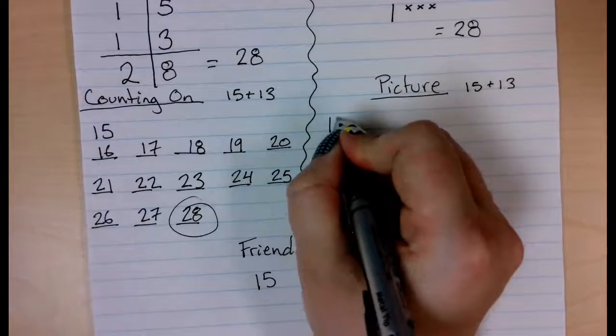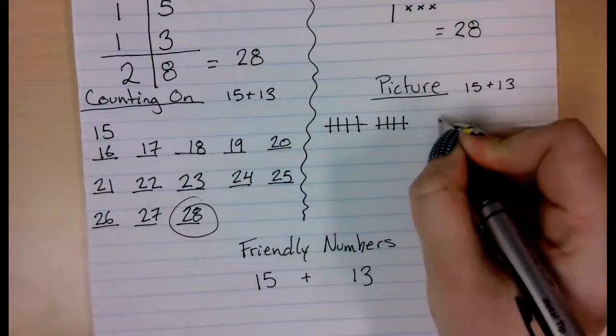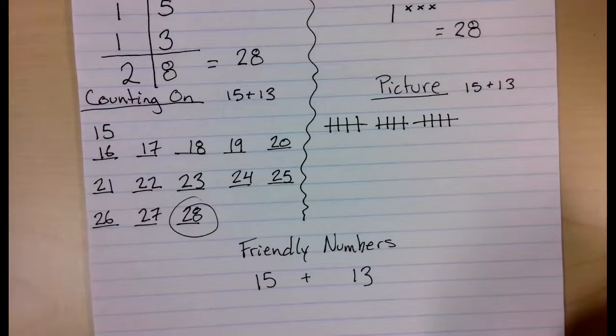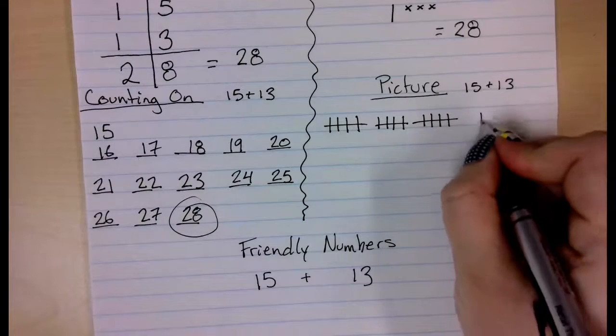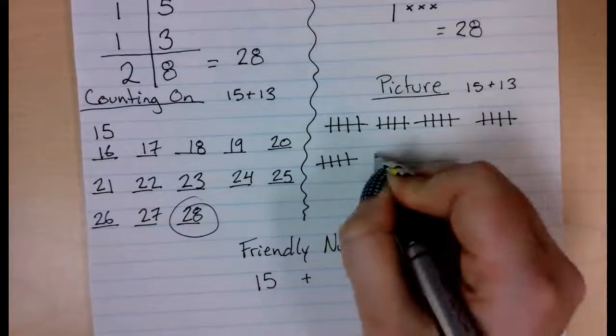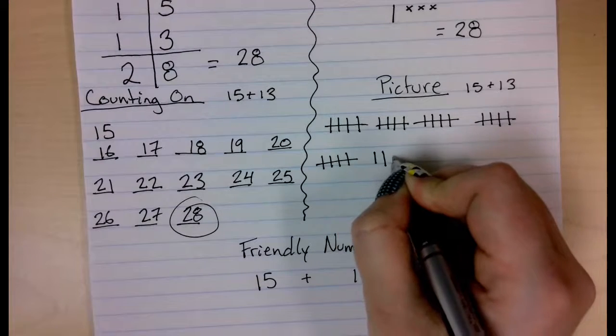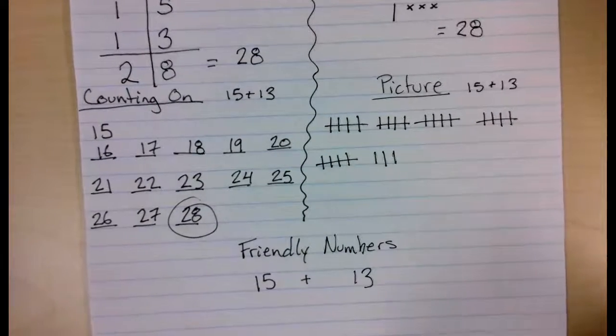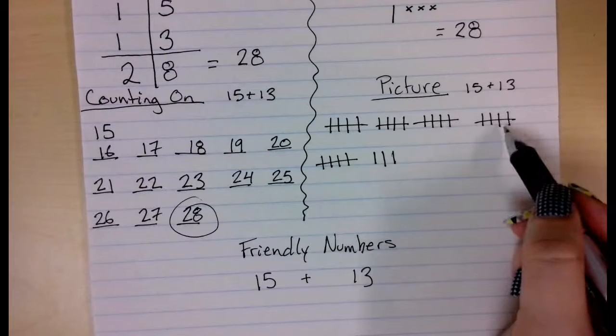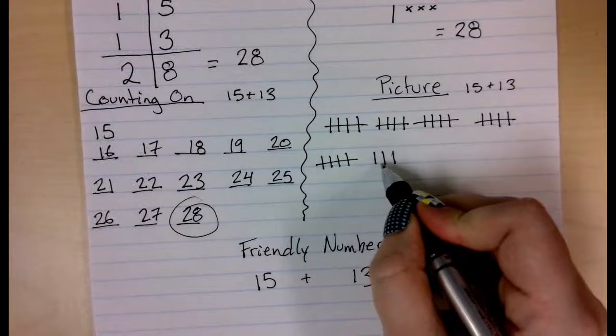So I am going to draw tick marks, 5, 10, 15, and then I am adding my 13, 5, 10, 11, 12, 13, and when I count them all up, I have got 5, 10, 15, 20, 25, 26, 27, 28.